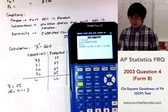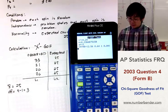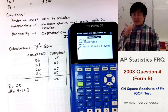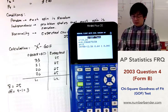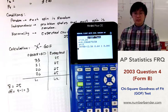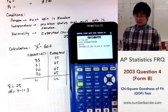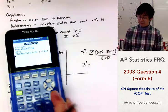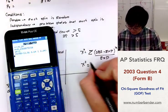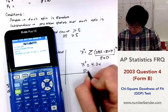The calculator gives us our chi-square value and a p-value of 0.2366. Since the p-value is greater than alpha of 0.05, and even greater than alpha of 0.10, we are not going to reject the null hypothesis.